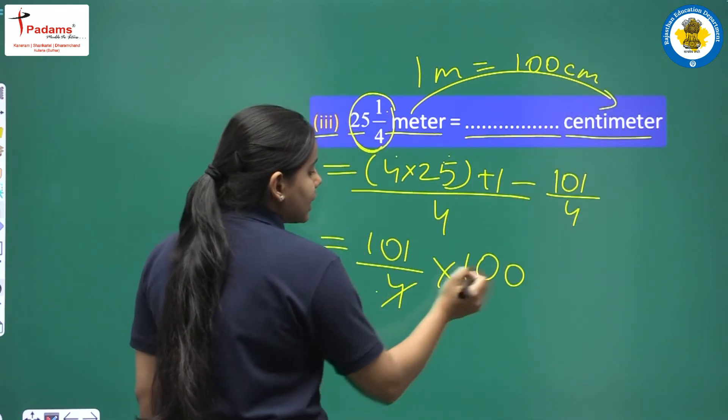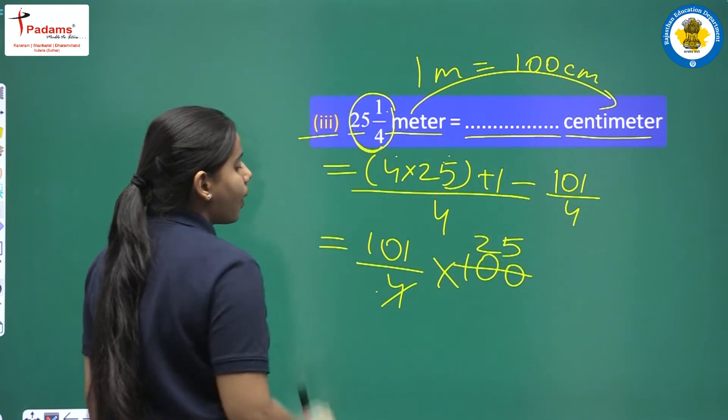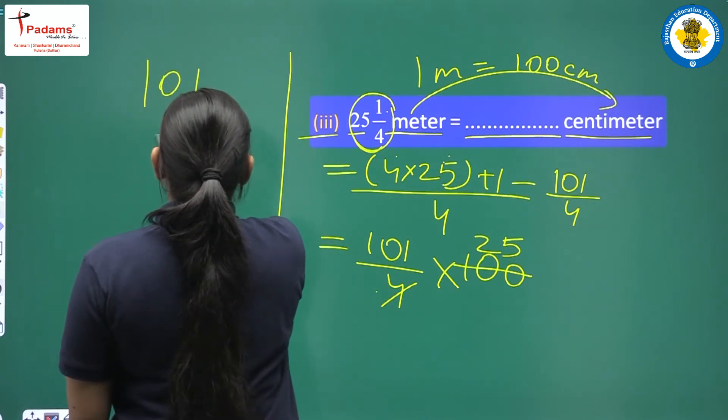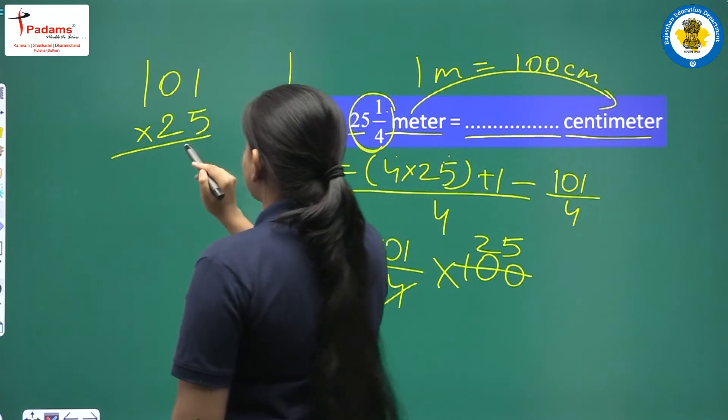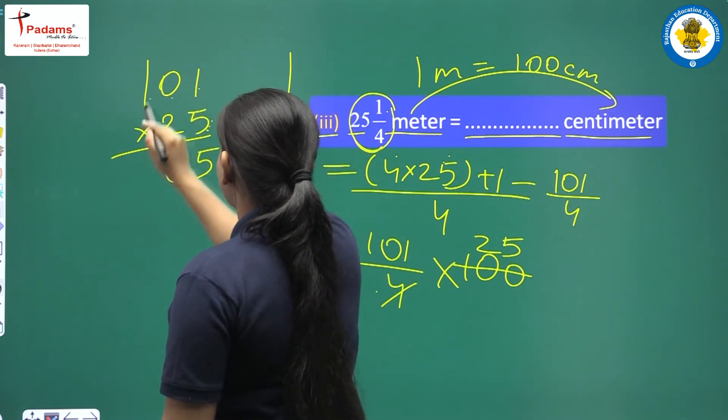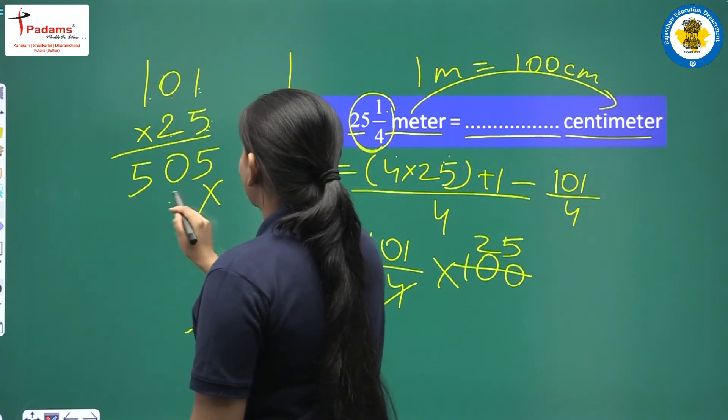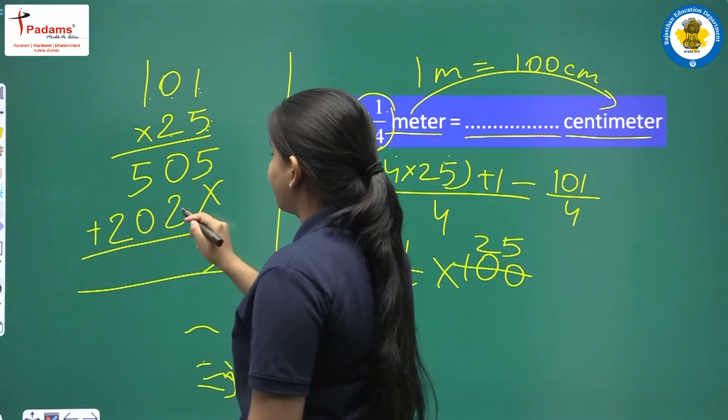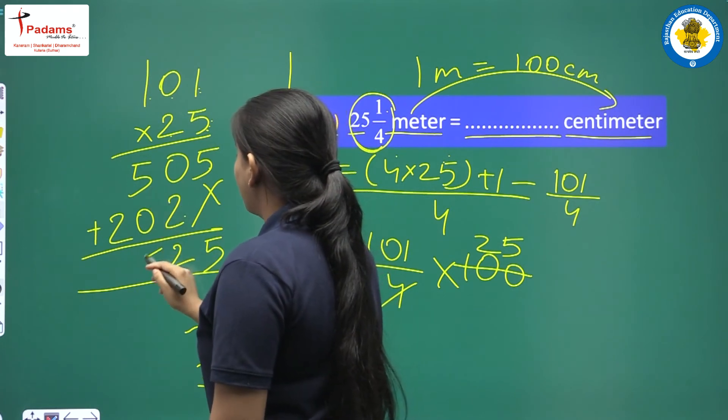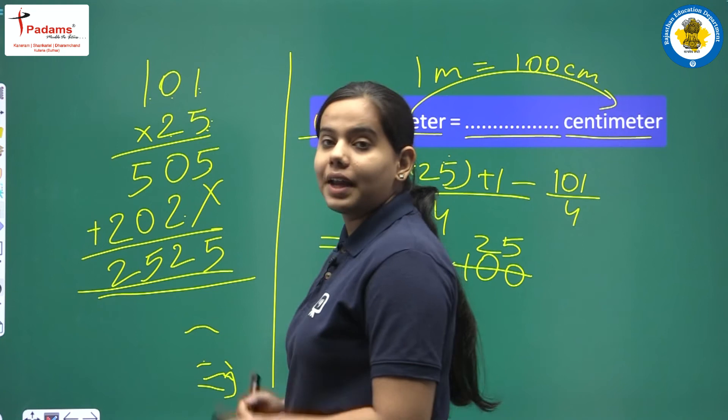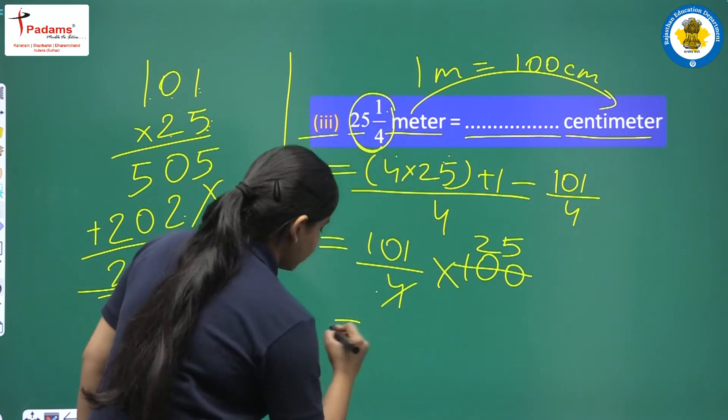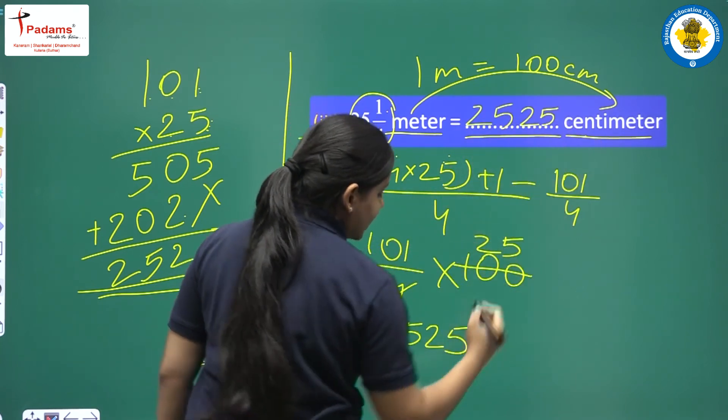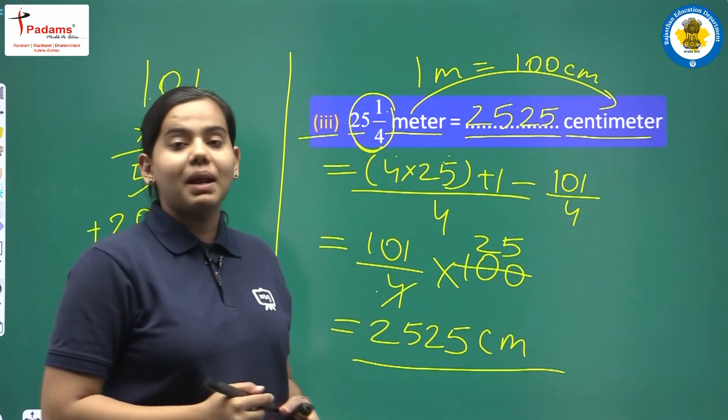Now divide 4 into 100, we will get 25. Now 25 we have to multiply children by 101. Let us multiply here. Let's start from the smaller house. 5 ones is 5. 5 zeros are 0. 5 ones 5 again. Then 2 ones are 2. 2 zeros are 0. And 2 ones are 2. Let us add it to get the final answer. 5 plus 0 is 5. 2 plus 0 is 2. 5 plus 0 is 5. And then we have 2. So this is our final answer children. That is 2,525. This is 2,525 and the units are centimeter. We have converted meters into centimeters.